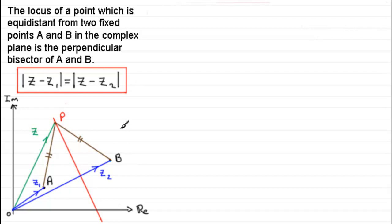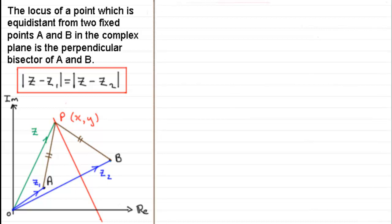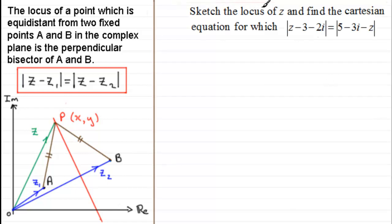Any point P is given by coordinates (x, y), so the complex number Z equals x plus iy. Here's a question to try: sketch the locus of Z and find the Cartesian equation for which the modulus of Z minus 3 minus 2i equals the modulus of 5 minus 3i minus Z. Pause the video and give this a go.